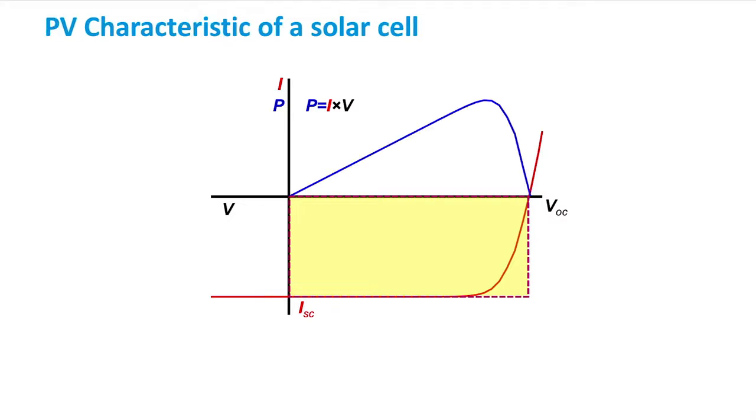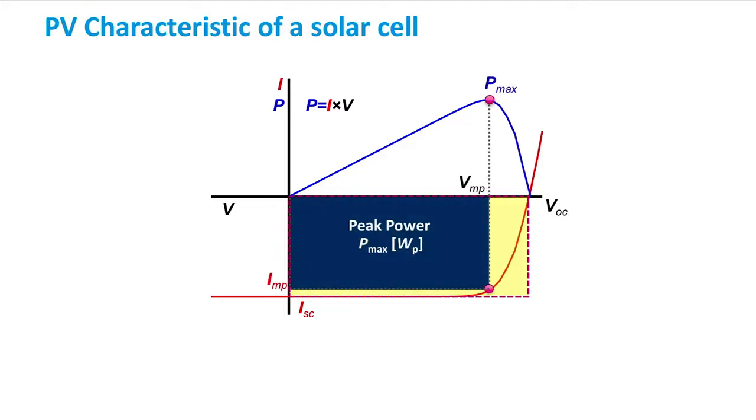Now we can see the power as a function of voltage. We can see that there is a point where the power generated by the solar cell is maximized. We call this our maximum power point. The voltage at this maximum power point is given here as VMP and the current as IMP. You can see that the VMP is less than the VOC and the IMP is less than the ISC. This is always the case. The product of VMP and IMP gives the maximum power we can generate, which we denote here as Pmax.